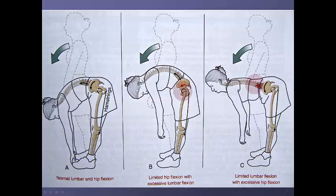Here's a normal: there's hip flexion plus lumbar motion. Here you see there's limited hip flexion — hardly any — and she's able to reach toward her toes with spinal flexion. The third situation is the opposite: she has normal hip flexion, pelvis on femur, but no spinal flexion.